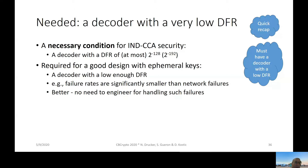This is a necessary condition for IND-CCA security: the DFR would be at most 2 to the minus 128, or minus 192 for level three. If you heard the previous talk, this is a necessary condition — it is not always sufficient, but that problem was already solved. So now what is required for a good design with ephemeral keys would be a decoder with low enough DFR. Low enough means failure rates significantly smaller than network failures, and even better, small enough so there is no need to engineer for handling such failures. So we have harsh targets and more lenient targets.